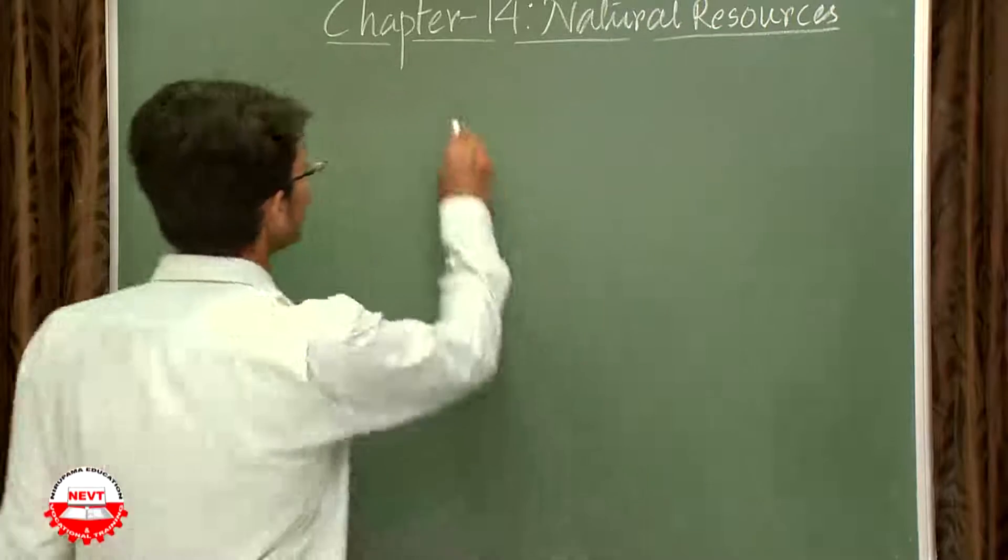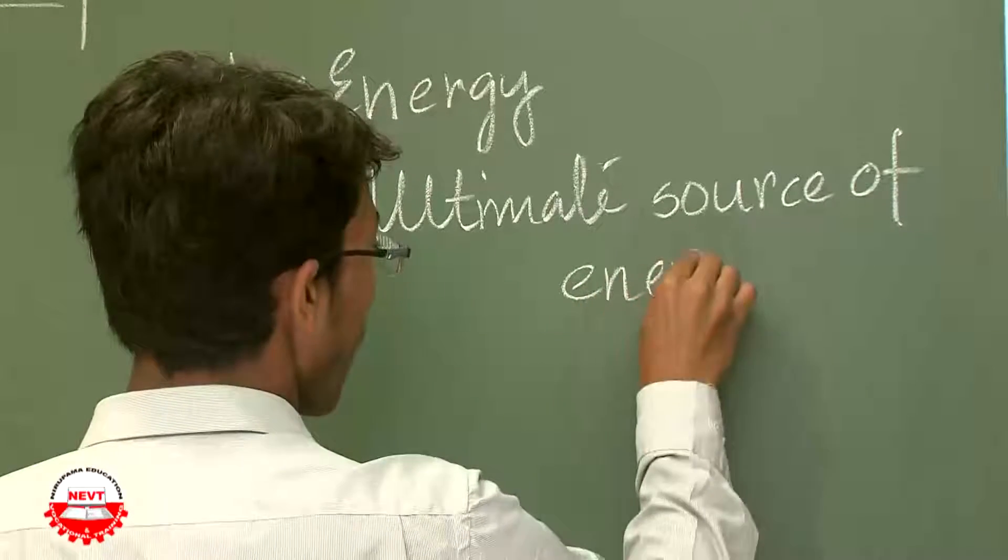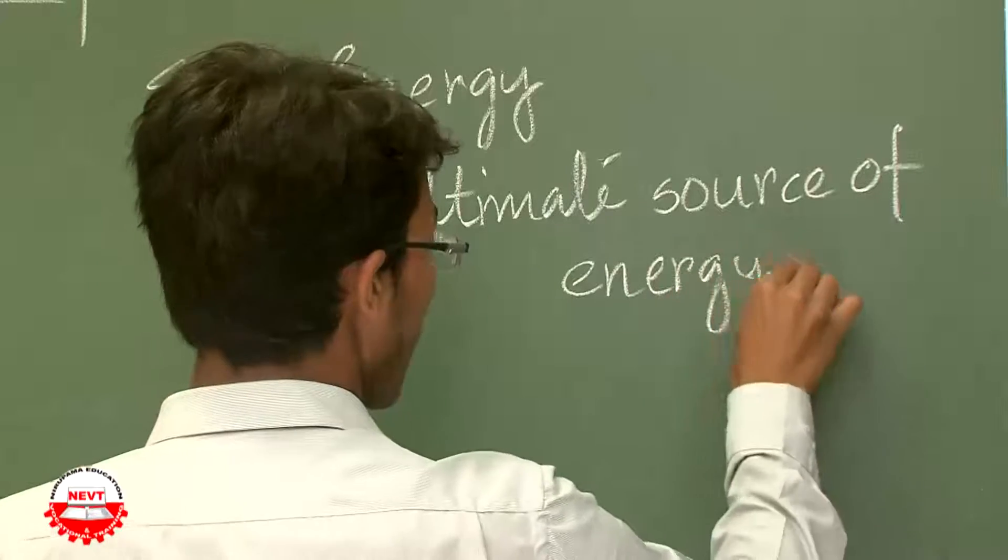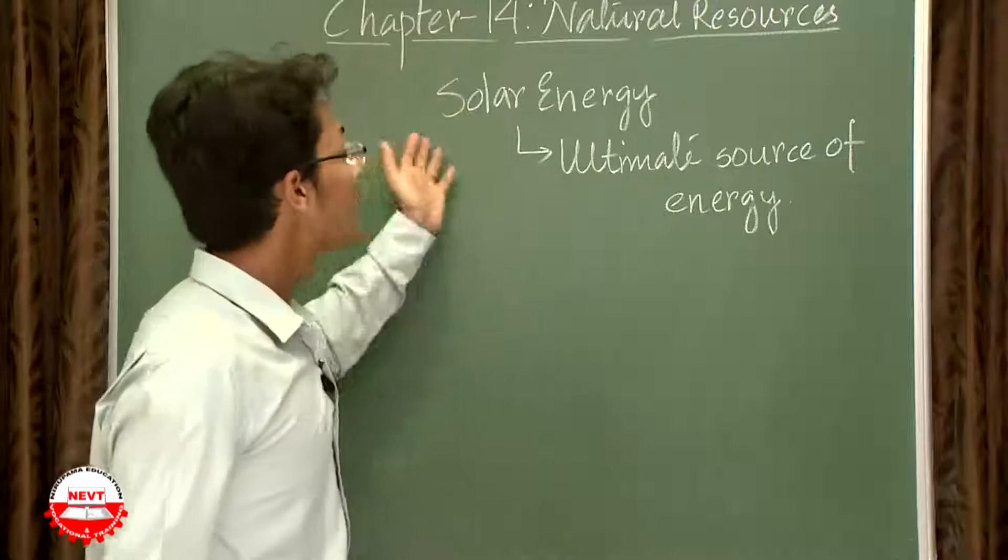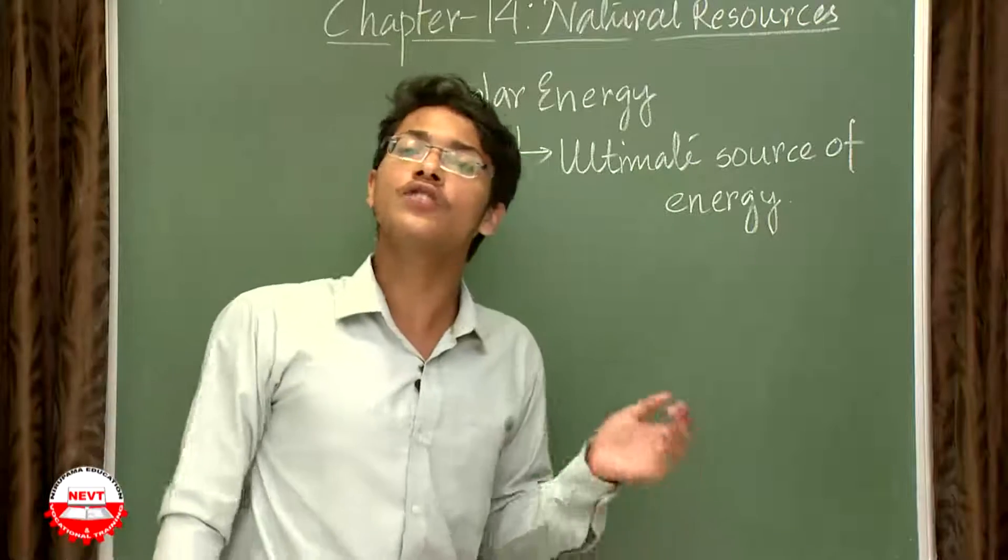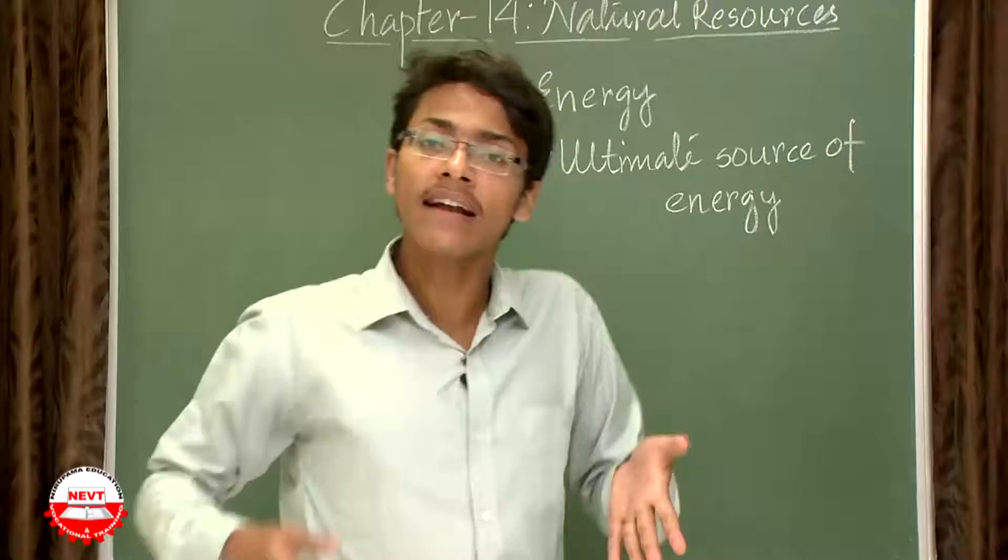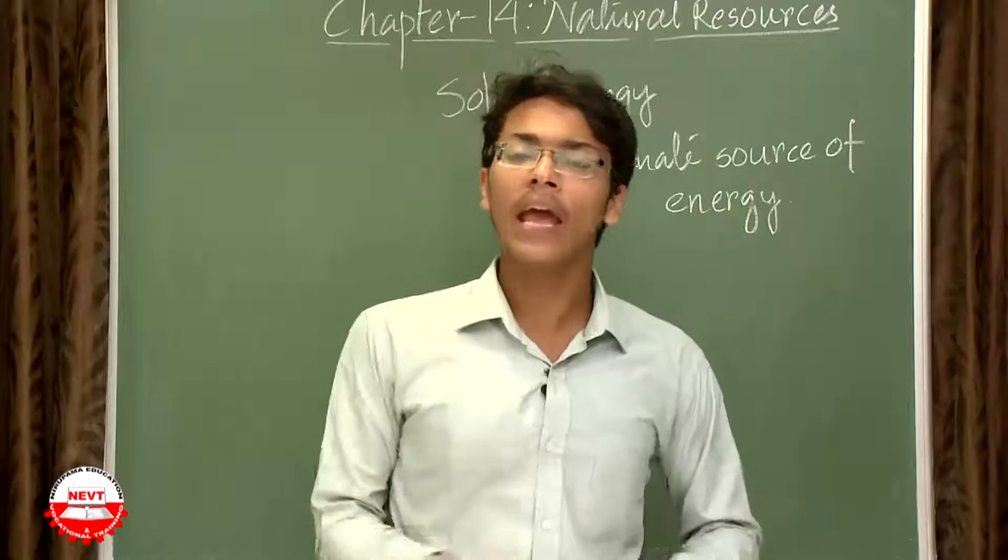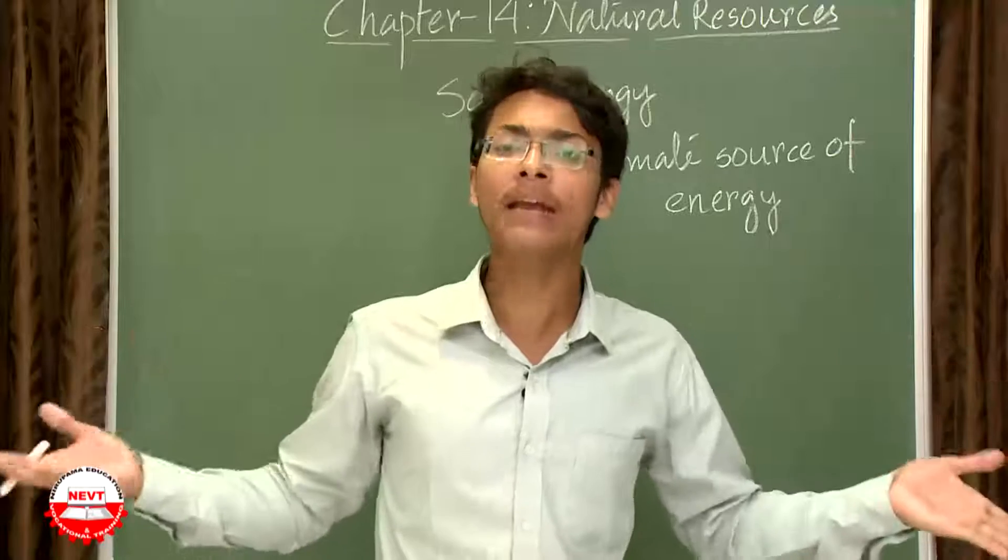What is the ultimate source of energy for us? That is our solar energy. So the ultimate source of energy for all living organisms around us is this solar energy. The solar energy is that source from which every happening is going on around us.